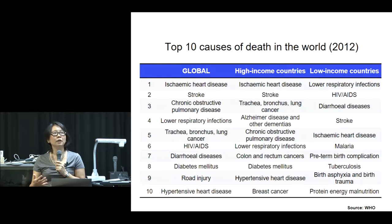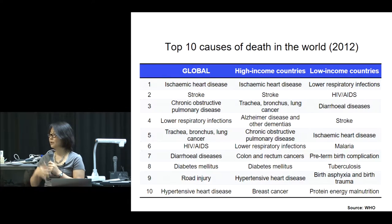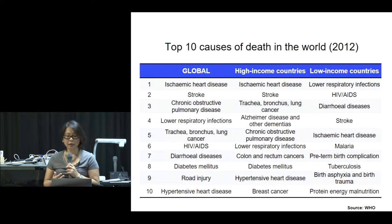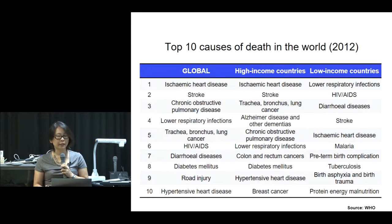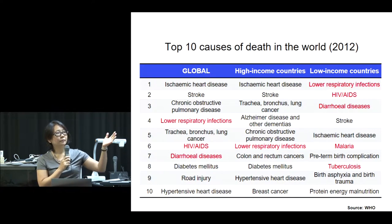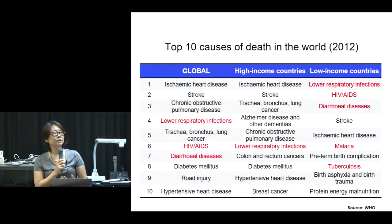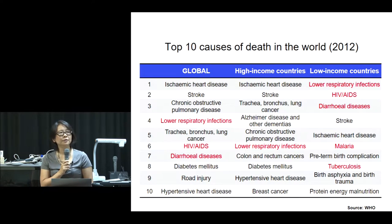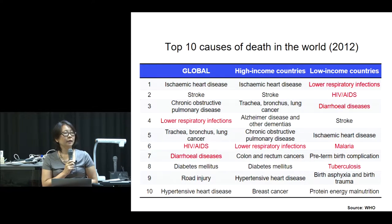Looking at the top ten causes of death for 2012: on the global scale, most causes are non-communicable diseases. Although the disease pattern changes constantly, communicable diseases remain a leading cause of mortality and morbidity, especially in less developed or low-income countries, highlighted in red. The leading causes for low-income countries are communicable diseases: lower respiratory infections, HIV/AIDS, diarrheal diseases, malaria, and tuberculosis.